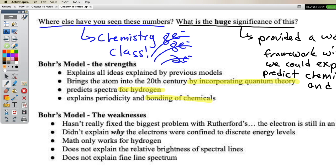What Bohr said was that when electrons are at these stable quantized energy levels, they just don't emit EMR. But this didn't explain why they didn't emit EMR at those stable levels, nor why they were quantized to those discrete energy levels. It worked — it explained the spectrum of hydrogen — but it only worked for hydrogen. The math only really works for hydrogen.